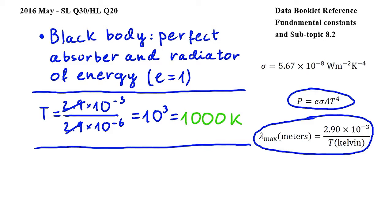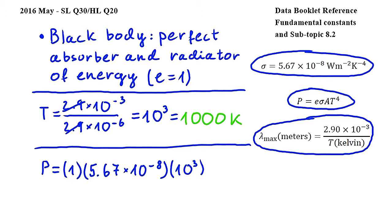So substituting into this equation, we get P is equal to 1 times the Stefan-Boltzmann constant, so 5.67 times 10 to the power of negative 8, times the temperature, and I will use 10 to the power of 3 here, and this is raised to the power of 4.